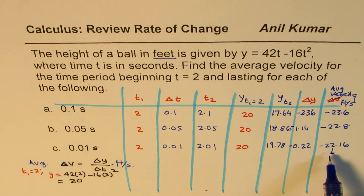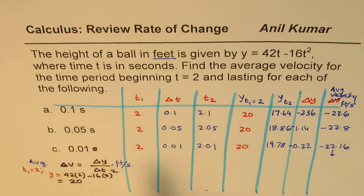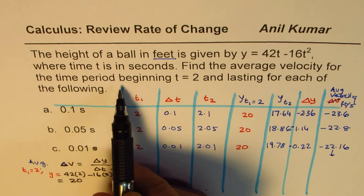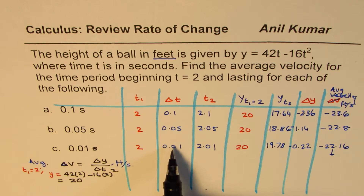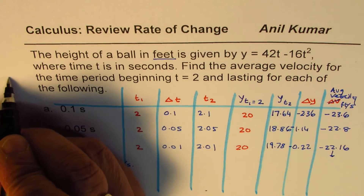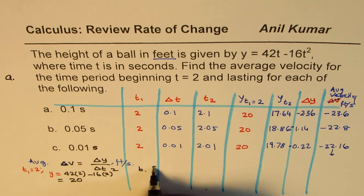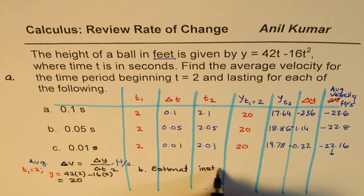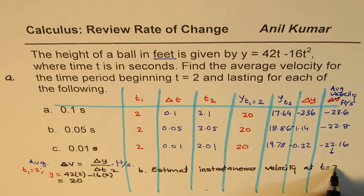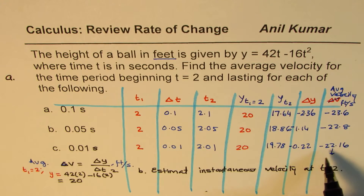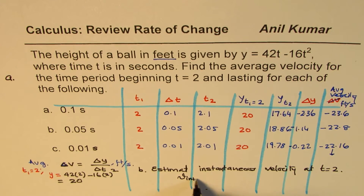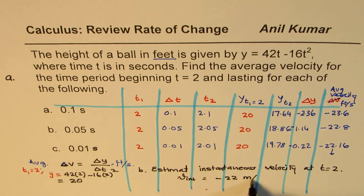That is how we can also find the instantaneous rate of change of velocity at t equals 2. In this question we found average velocity for the time period beginning at t equals 2 and lasting for each of the given intervals. These are the average velocities. If part B asked to estimate instantaneous velocity at t equals 2, following this pattern we see average velocity coming closer and closer to negative 22, so the instantaneous velocity is approximately negative 22 feet per second.